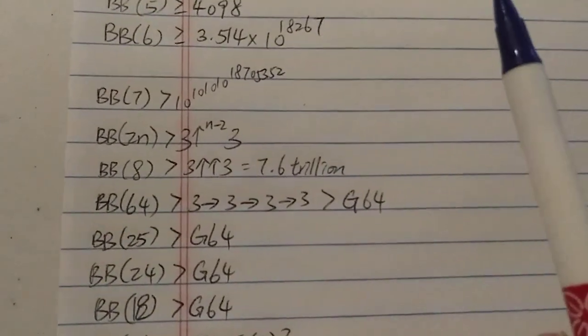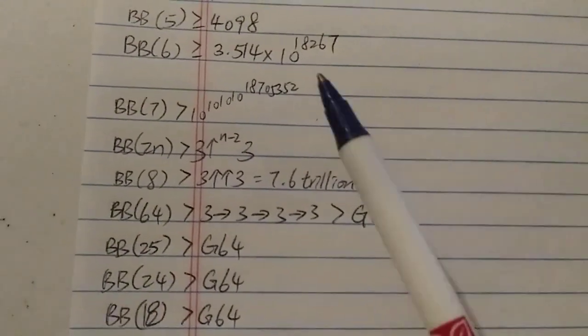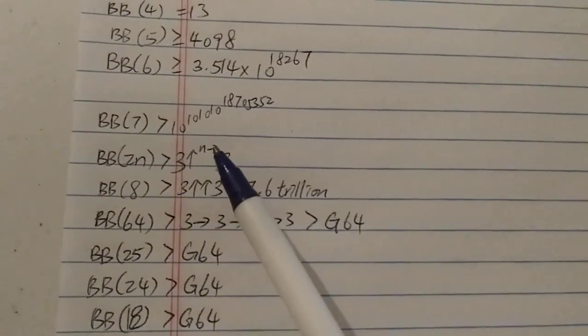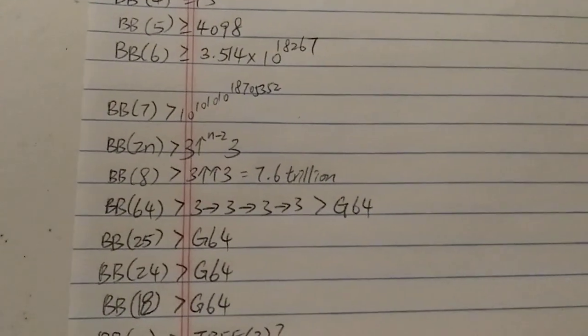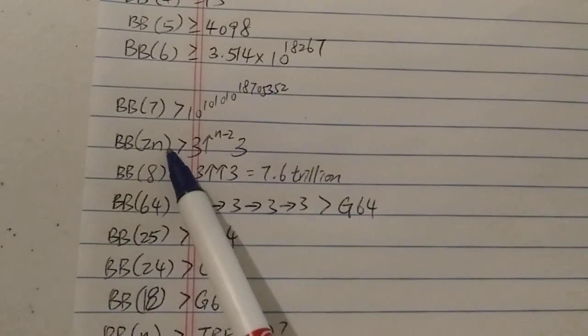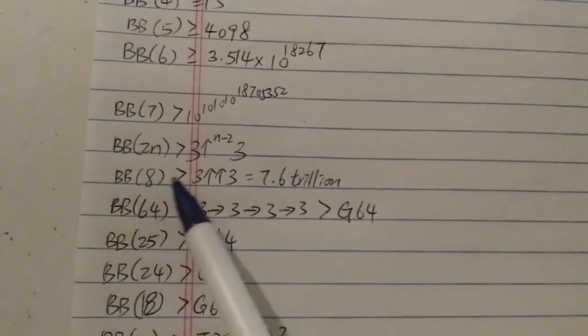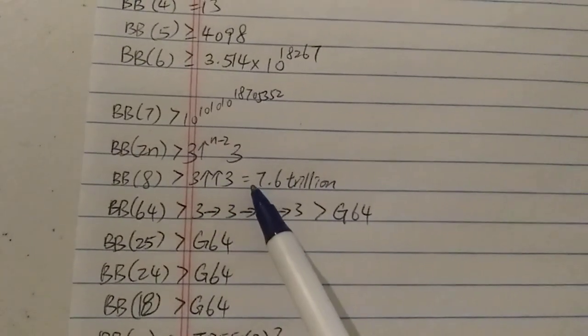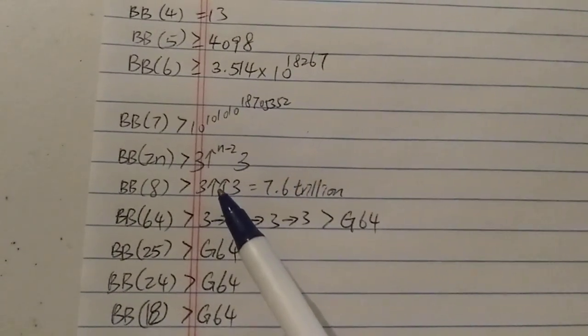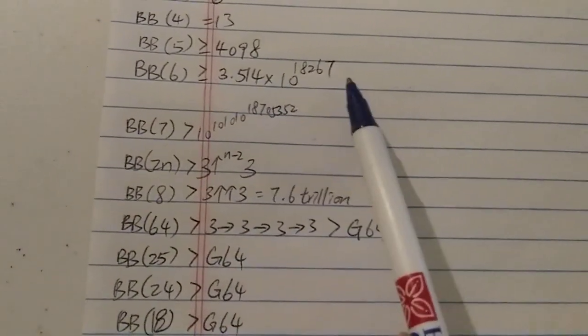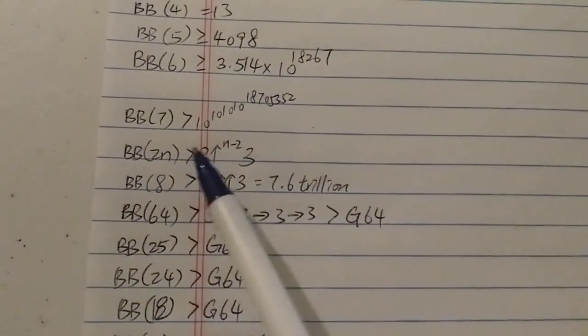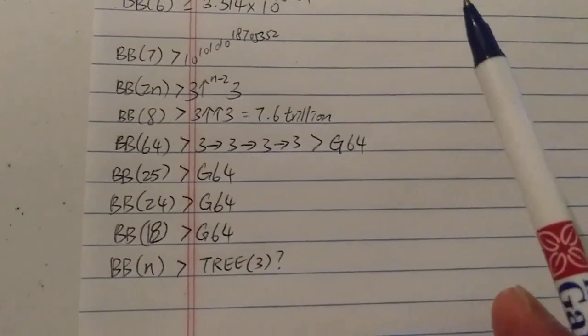People found out a very weak bound for the busy beaver. BB(2n) is bigger than 3↑↑↑(n-2). In other words, if you plug in 8, BB(8), that means BB(2 times 4), so BB(8) is bigger than 3↑↑3, which is around 7.6 trillion. As you can see, BB(6) is already much much bigger than 7.6 trillion, so this is a very weak lower bound.